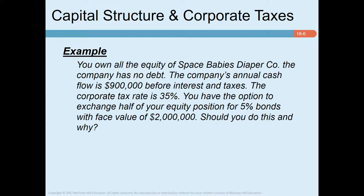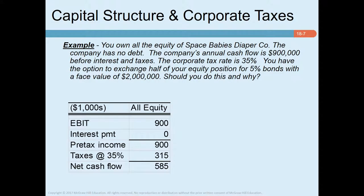Consider this example: you own all the equity of Space Baby's Diaper Company. Annual cash flow is 900,000 before interest and taxes; the corporate tax rate is 35 percent. You have the option to exchange half your equity for five percent bonds with a face value of two million. Should you do this? In the all-equity position: earnings before interest and taxes are 900,000, interest is zero, pre-tax income is 900,000, taxes are 350,000 (approx.), and net cash flow is 585,000.